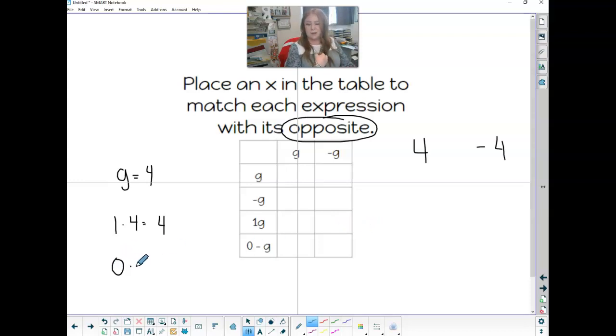Now we have 0 and we're taking away 4. 0 minus 4 is negative 4. So the opposite of a negative is a positive.